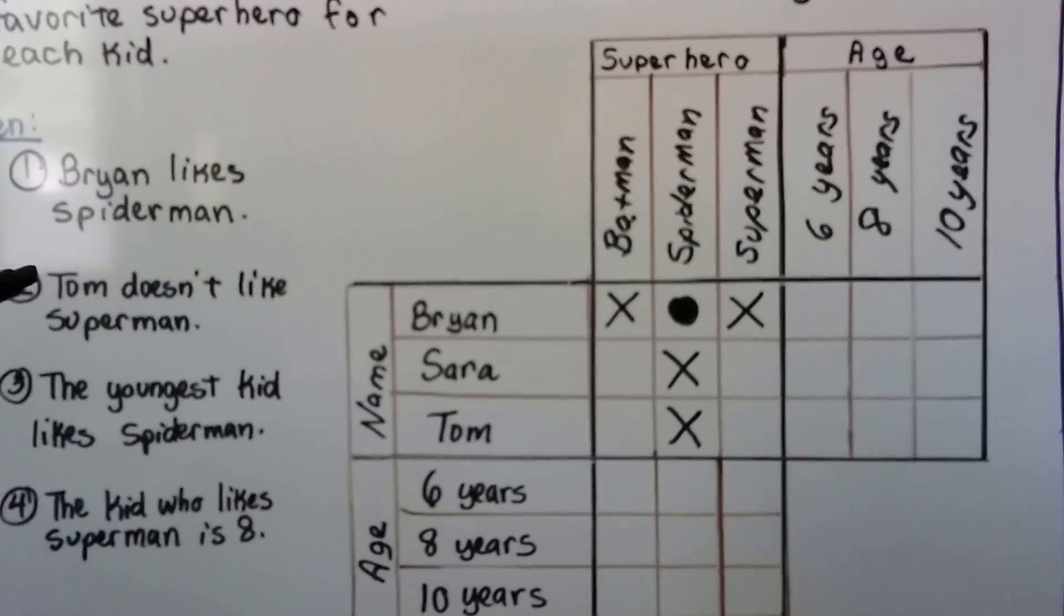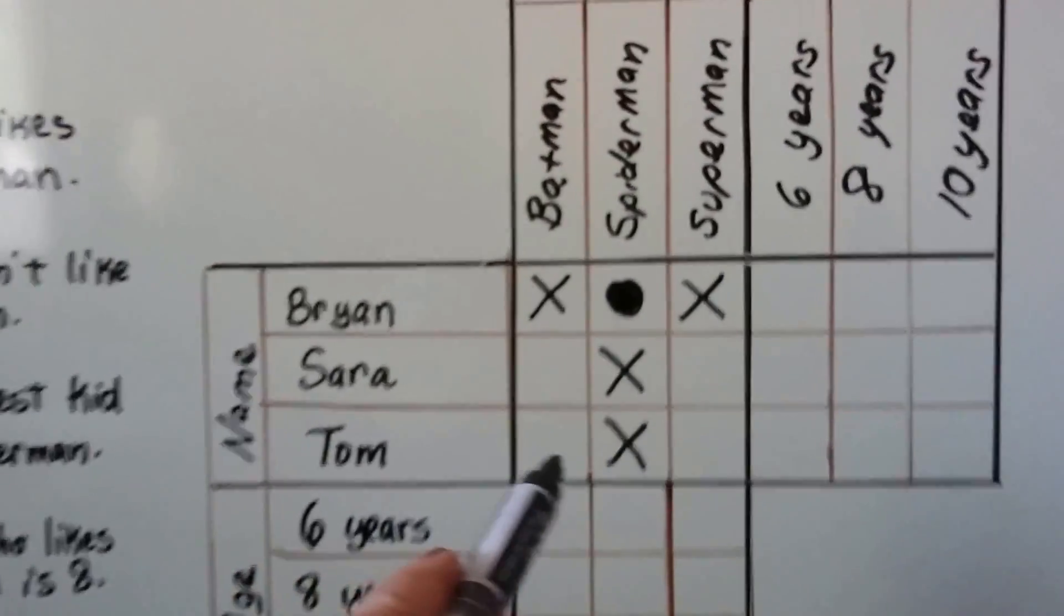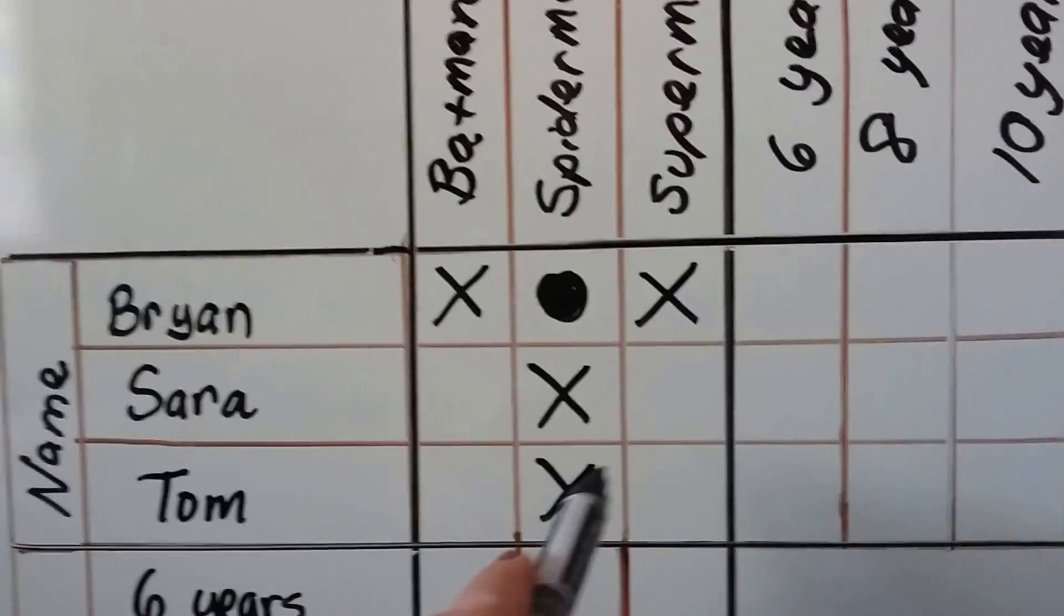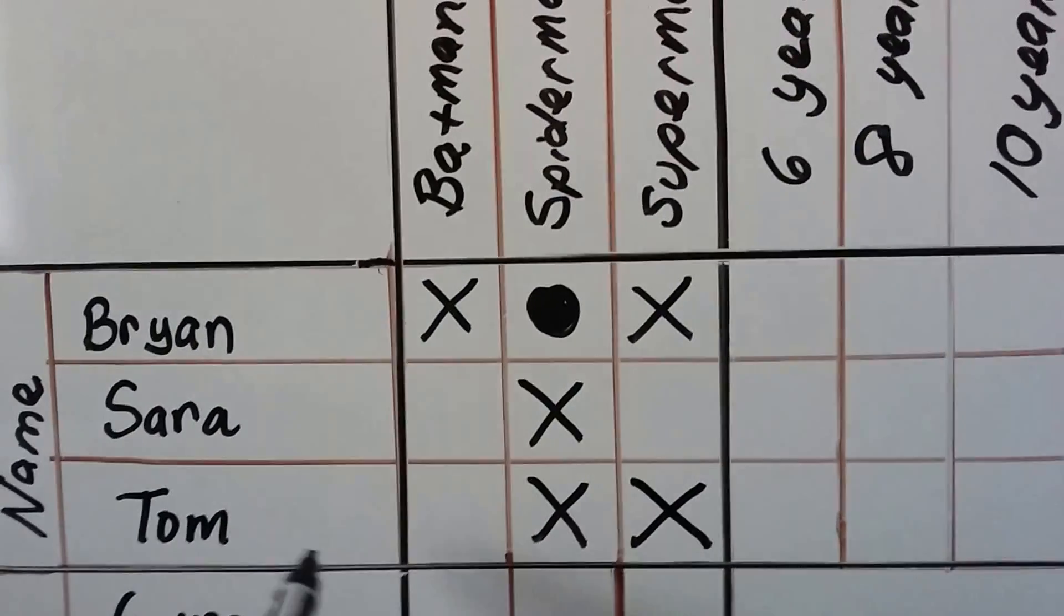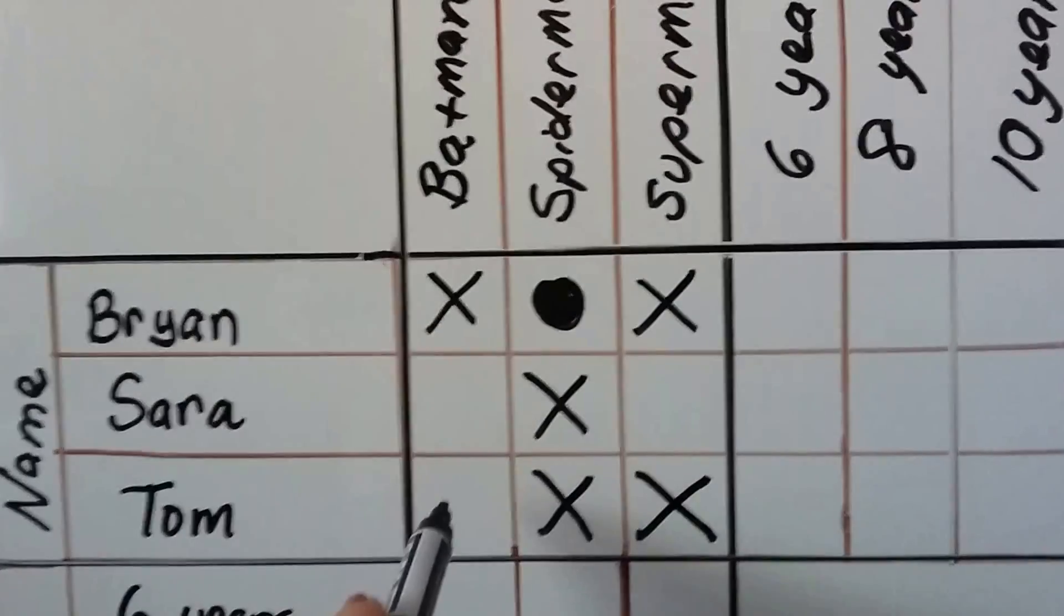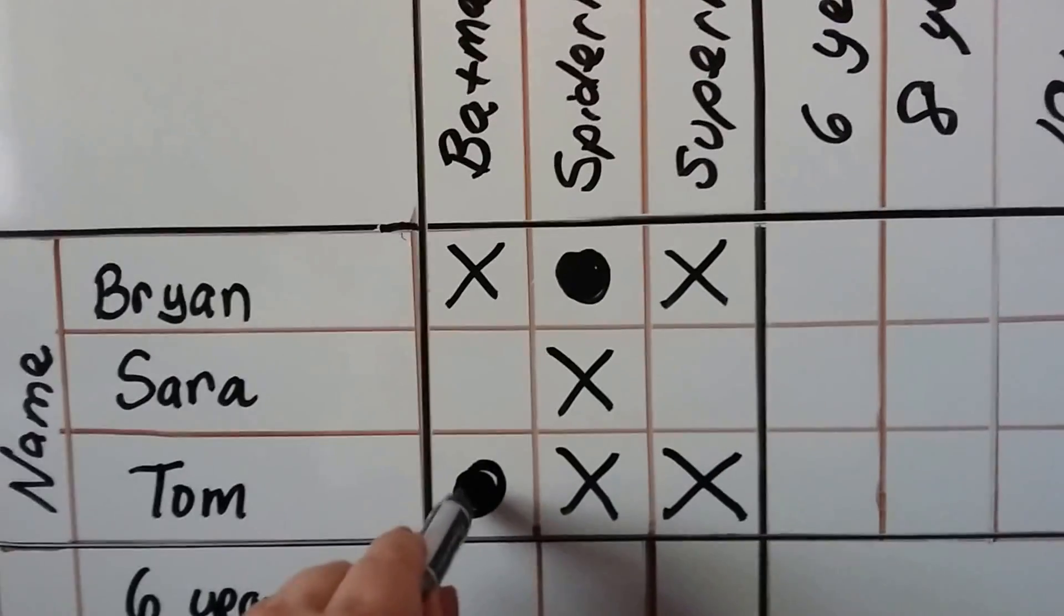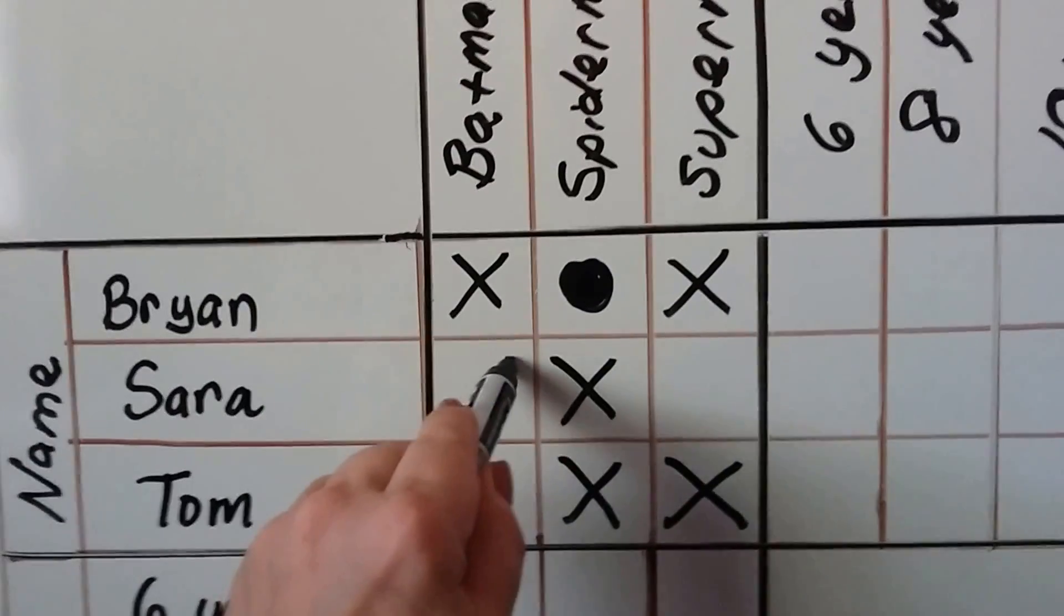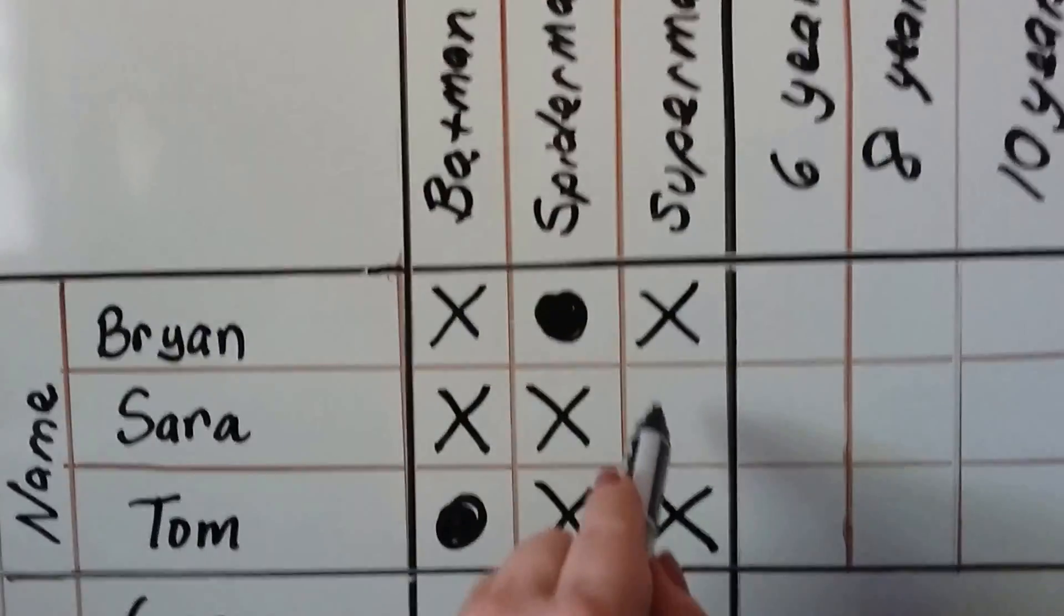Now it says Tom doesn't like Superman. We already know that he's not Spider-Man. If Tom does not like Superman, we can put an X here. That means the only thing that Tom could be is Batman. If Tom is Batman, then Sarah is not Batman, which means the only thing Sarah could be is Superman.